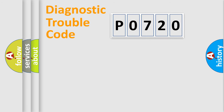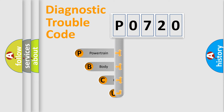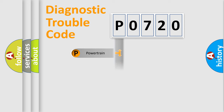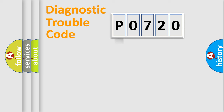Let's do this. First, let's look at the history of diagnostic fault code composition according to the OBD2 protocol, which is unified for all automakers since 2000. We divide the electric system of an automobile into four basic units: Powertrain, Body, Chassis, and Network.